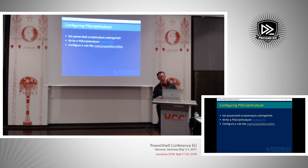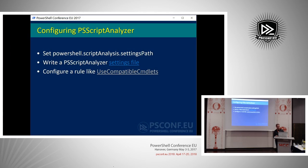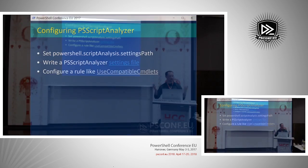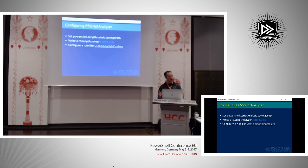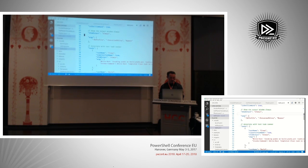Let's talk about configuring PS Script Analyzer. PS Script Analyzer is a project that gives you rule-based analysis on PowerShell scripts, modules, and DSC resources, flagging things that violate best practices or might be risky from a security perspective. We've plugged it into VS Code so these rules mark your code interactively as you're developing. By default we use a small set of rules — showing all rules makes your code marked up everywhere — and you can configure those rules using a PS Script Analyzer settings file.